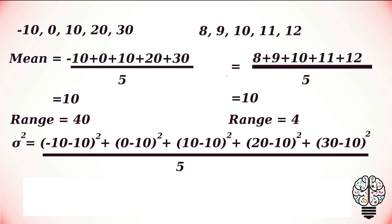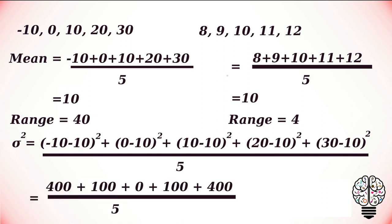We sum them up and divide by the number of data points. We have 5 data points, so we divide by 5. (-10 - 10) squared gives us 400; (0 - 10) squared gives 100; (10 - 10) squared gives 0; (20 - 10) squared gives 100. The total is 1000 divided by 5, which gives us a variance of 200.